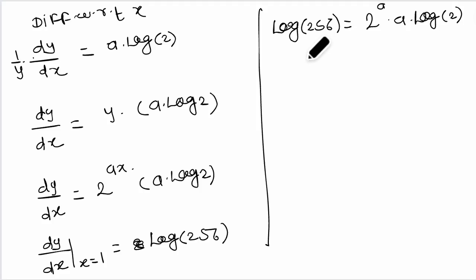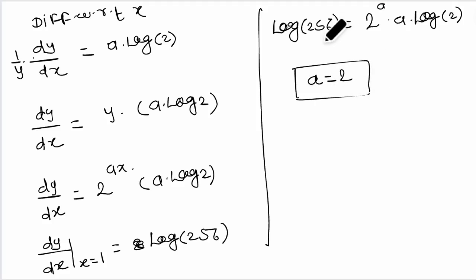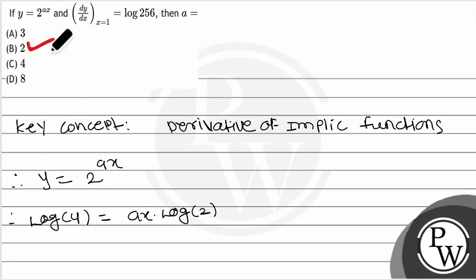This log of 256 can be written in terms of 2. If we simplify, we cancel out all terms and get the value of a equal to 2. So the final value of a is 2, and option number B is the correct option. Thank you so much.